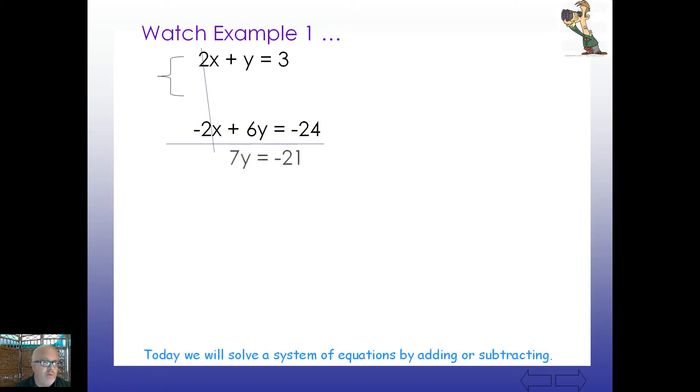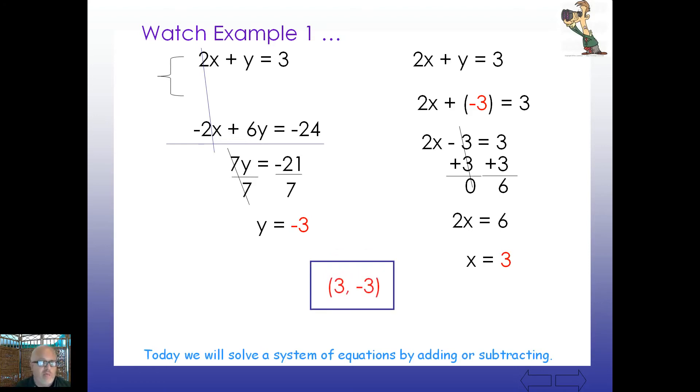2x's cancel. We get 7y equals negative 21. And lo and behold, y is going to equal negative 3. What do we do with the negative 3? Plug it in wherever you like. I'm going to take it here at the top, plug it right in here at negative 3. And then I'm going to simply solve for x. Add 3 to both sides, and I'm looking at 2x equaling 6, so x equals 3. Now what's my ordered pair here? Remember, x comes first, so it's simply 3, negative 3. This ordered pair is the point at which these two lines cross right there. At 3, negative 3, that's where they cross.